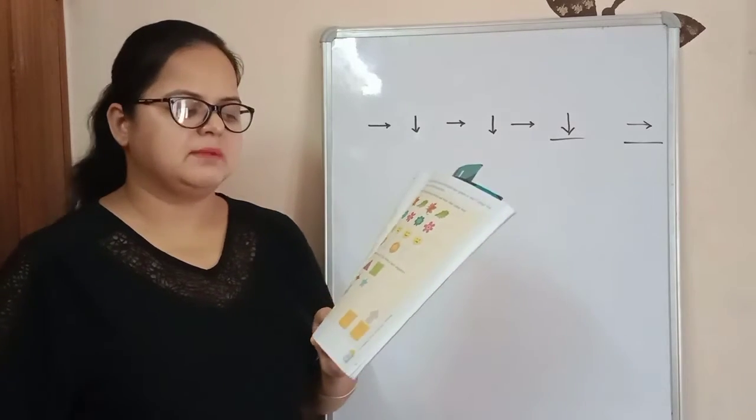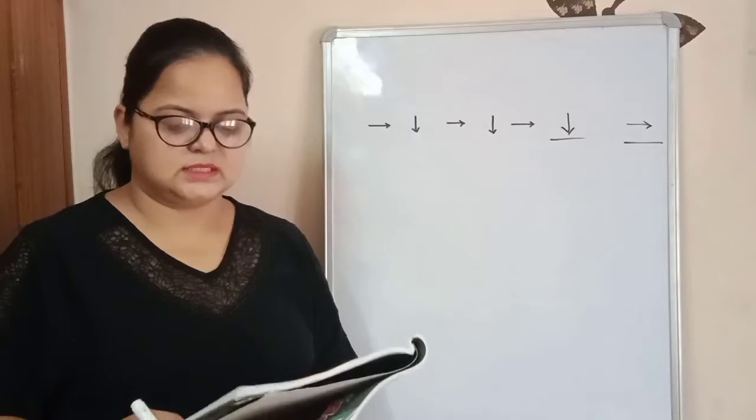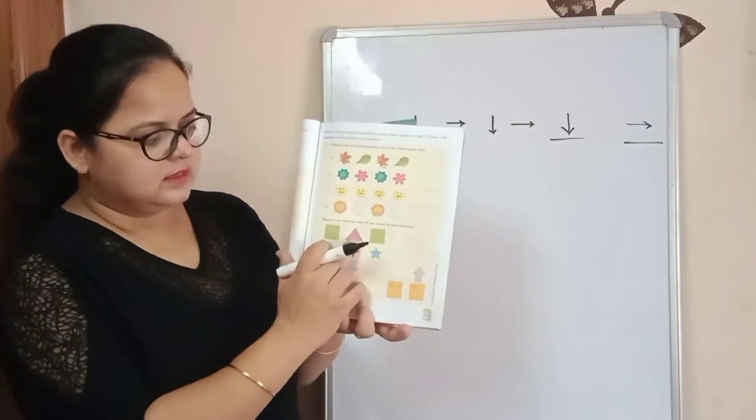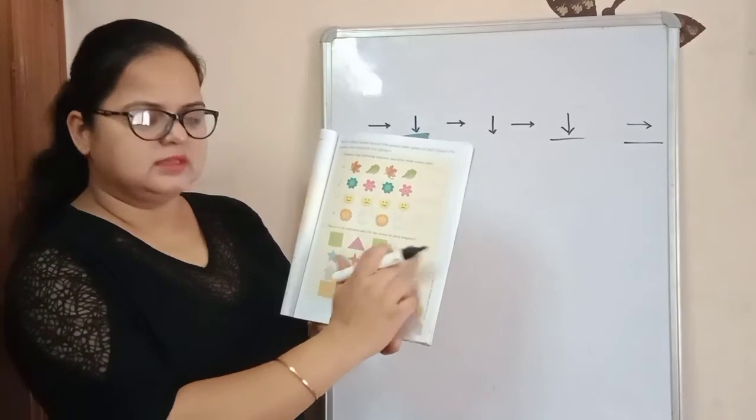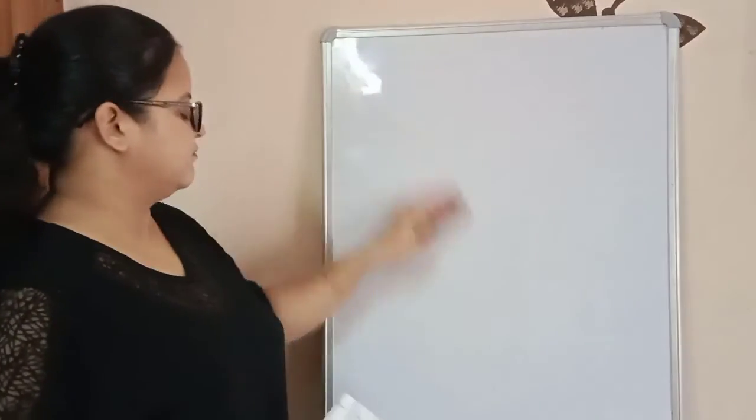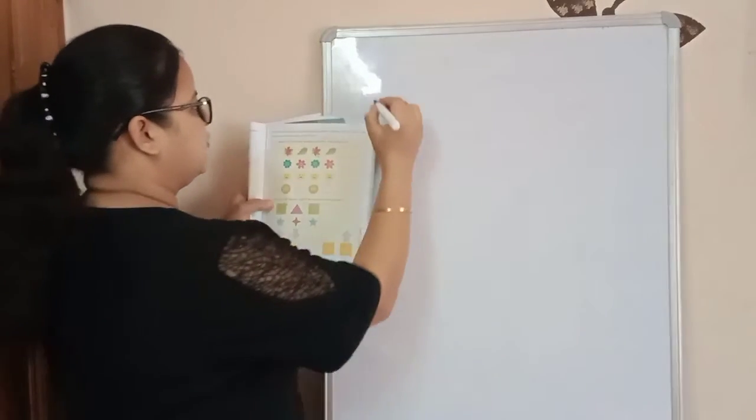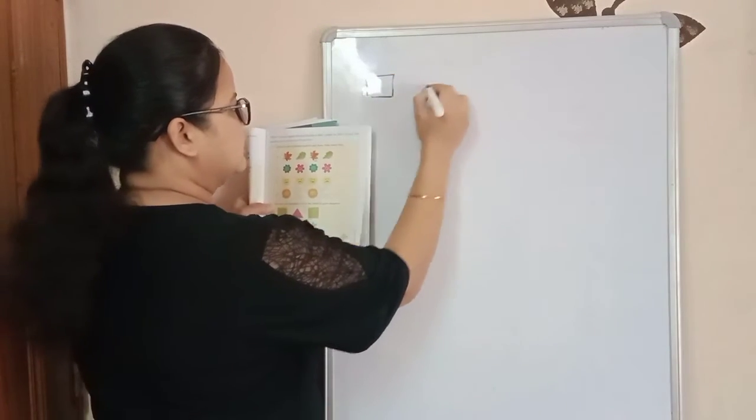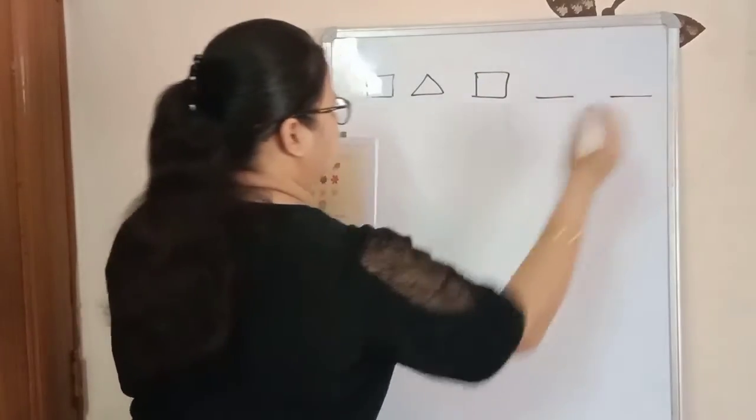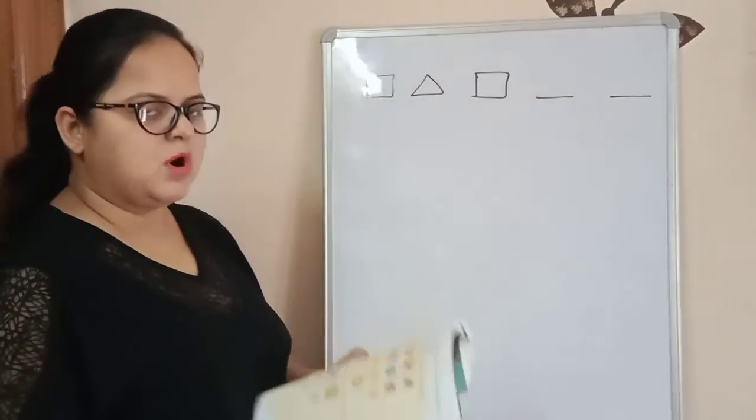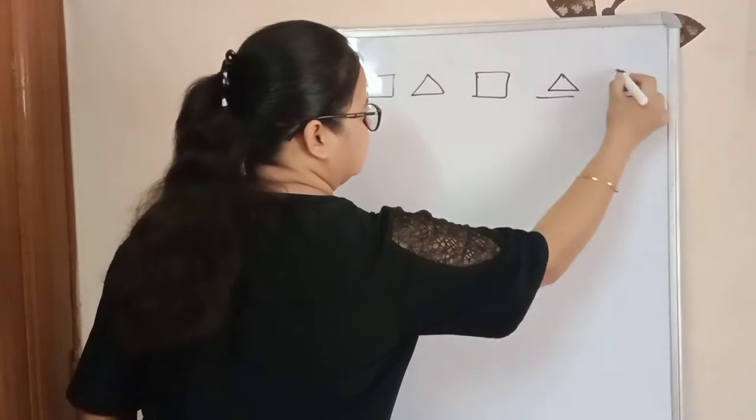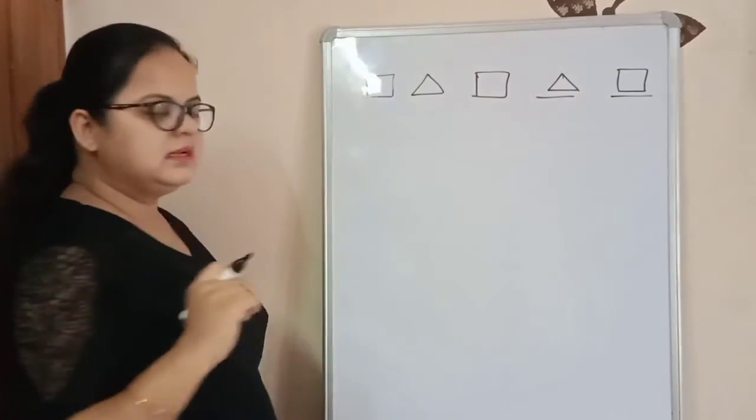Observe the patterns and fill the boxes in each sequence. The first one is square, triangle, square. Then we have two blank boxes. See? The first is square, second is triangle, third is square. And here we have two blank boxes. Here we will make a triangle, and another, here we will make a square.